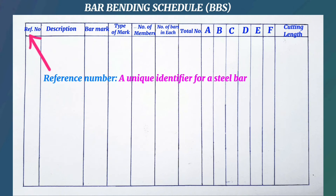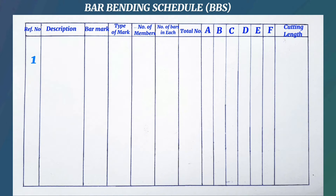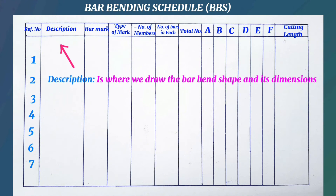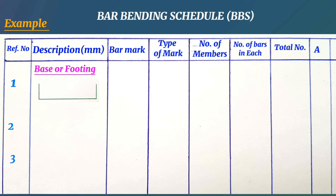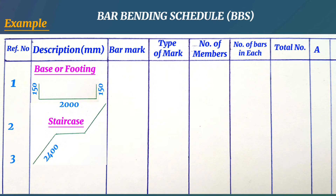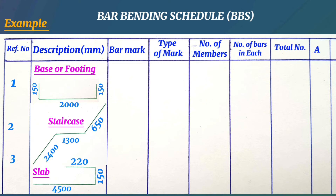The reference number is a unique identifier for a steel bar — for example 1, 2, 3, 4, and so on. Under description is where we draw the bar bend shape and write the dimensions for each shape. For example, for a steel bar in the base we write 150 millimeters, 2 meters, and 150 millimeters. For a bar in the staircase we write 2.4 meters, 1.3 meters, and 650 millimeters. For a steel bar in the slab we write 4.5 meters, 150 millimeters, and 2.2 meters.